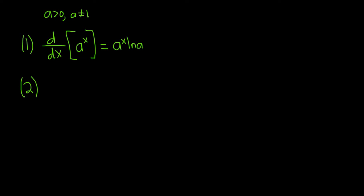The second formula tells us if we take the derivative with respect to x of the logarithm base a of x, this is equal to 1 over x times 1 over ln a. Kind of a strange formula and we'll also prove it in just a few seconds.